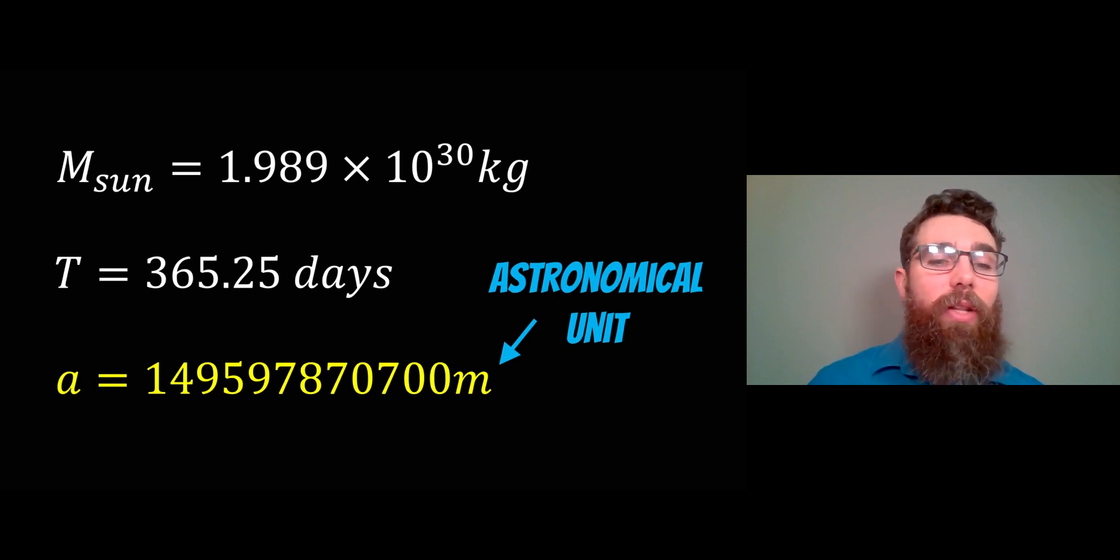If we put in the mass of the Sun and the orbital period, we get a rather large number in meters. It's about 1.49 × 10^10 meters, and that is known as one astronomical unit.